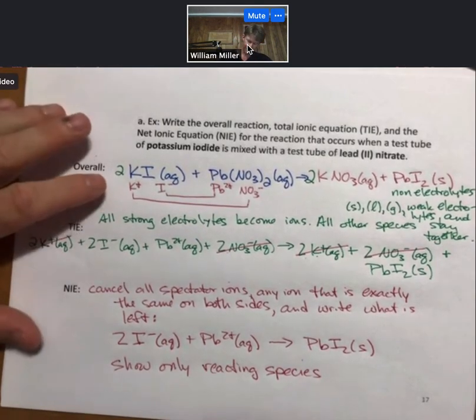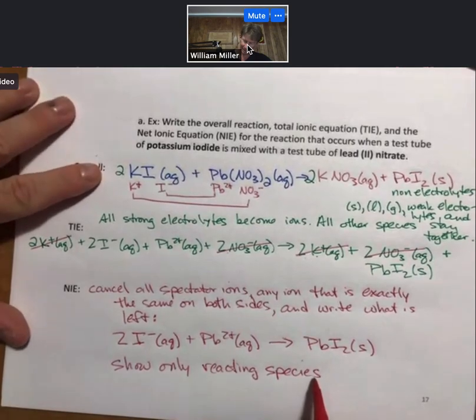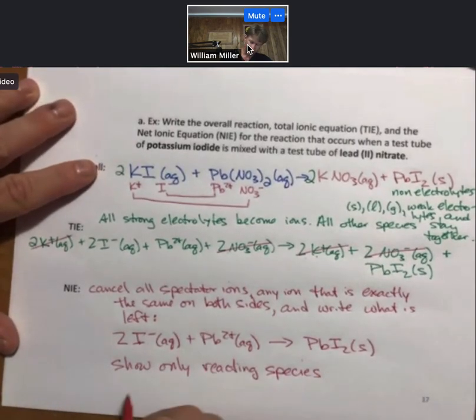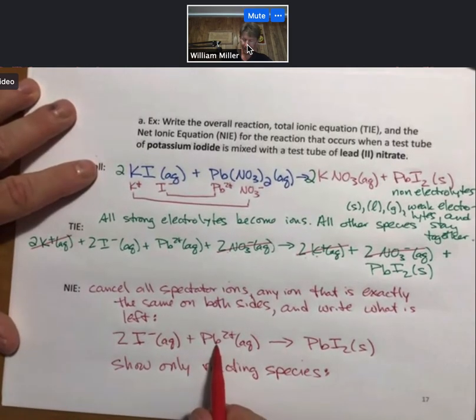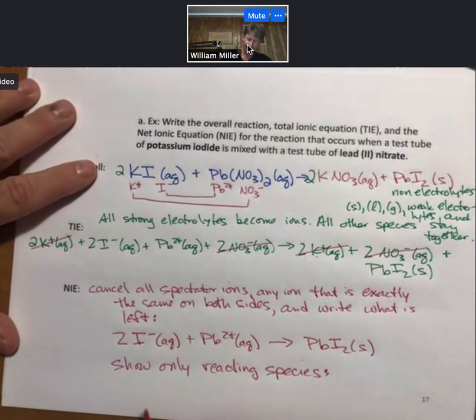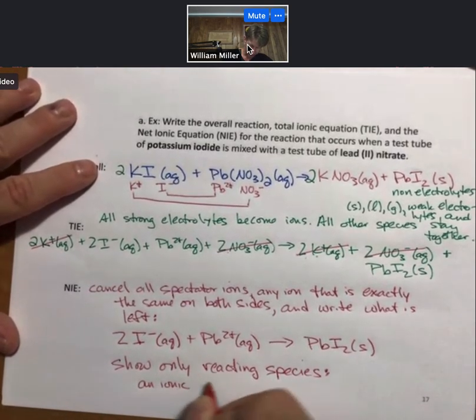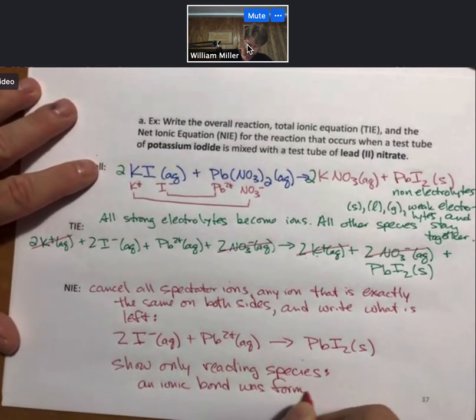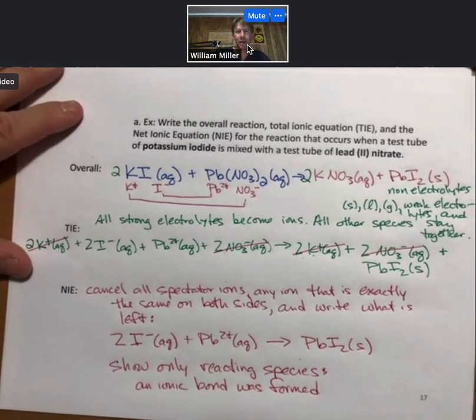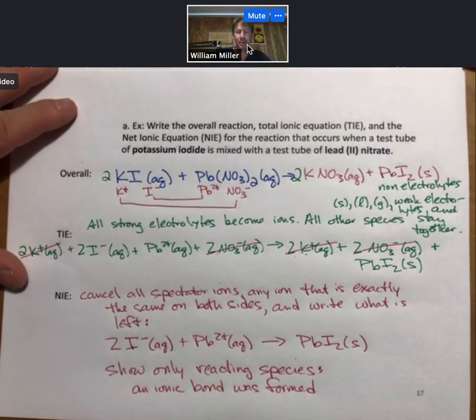And so it shows only the reacting species, and we can show that as iodide and lead 2 came together, an ionic bond was formed, and this is a very nice example of a chemical reaction, a double replacement reaction.